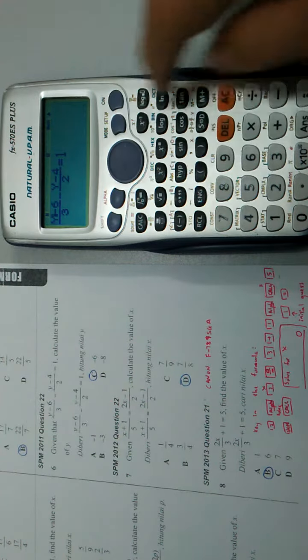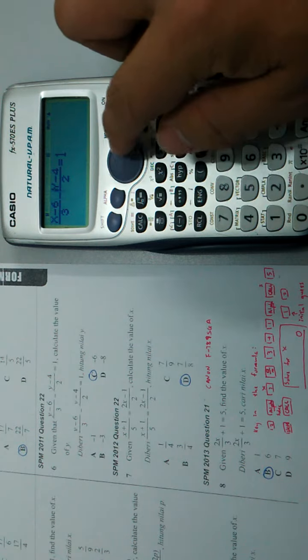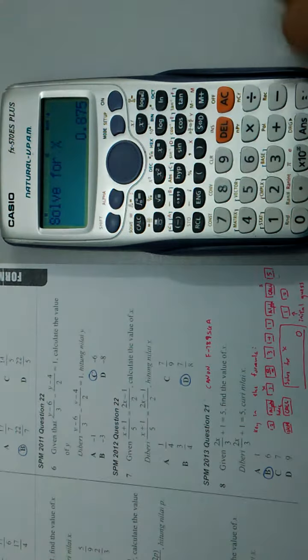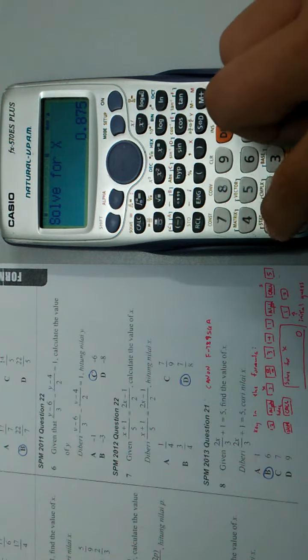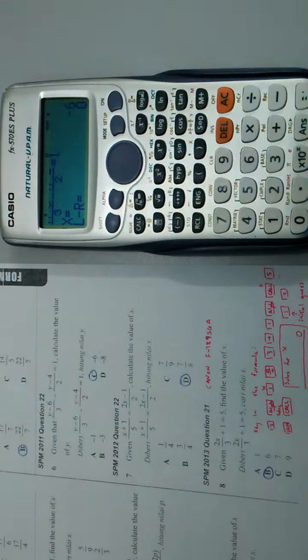So I go back to change the variable y to x, and shift solve. Then I put in initial guess as 1 and it returns negative 6.